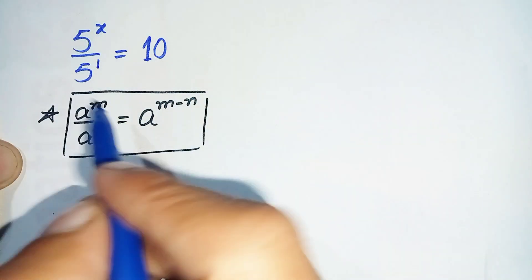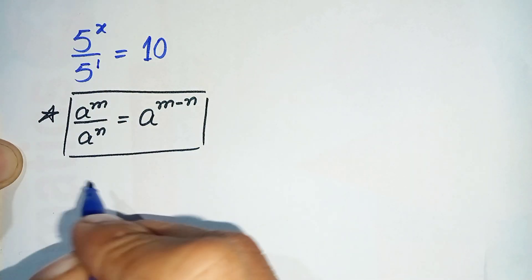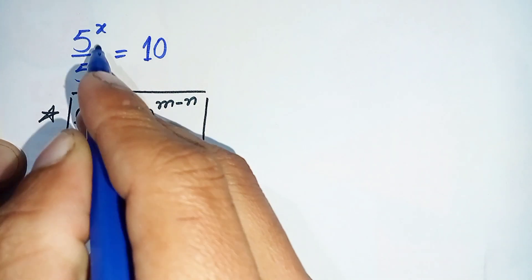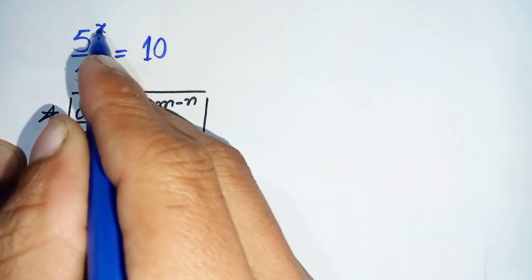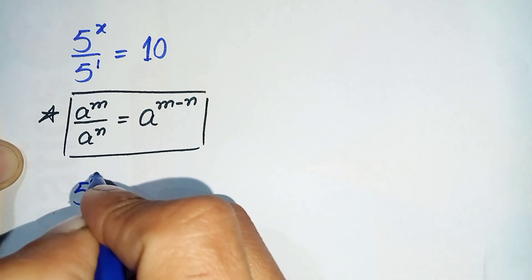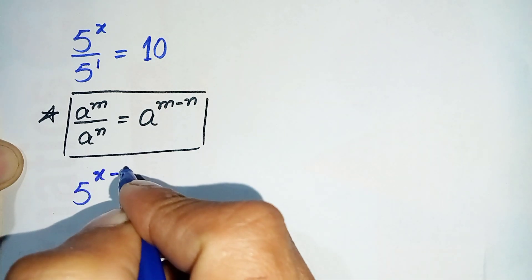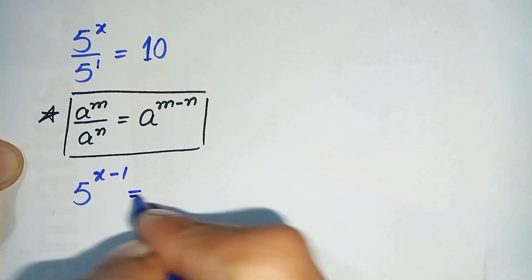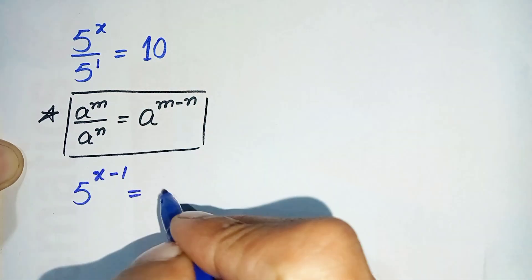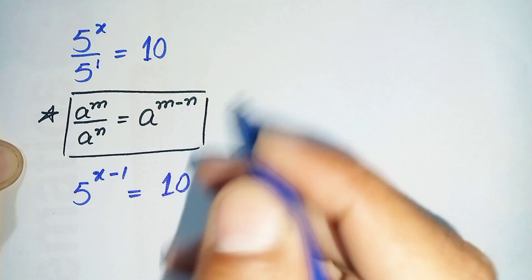That formula says a^m divided by a^n can also be written as a raised to power m minus n. Using this same-base formula, we write the base one time and subtract the powers: x minus 1 is equal to 10.